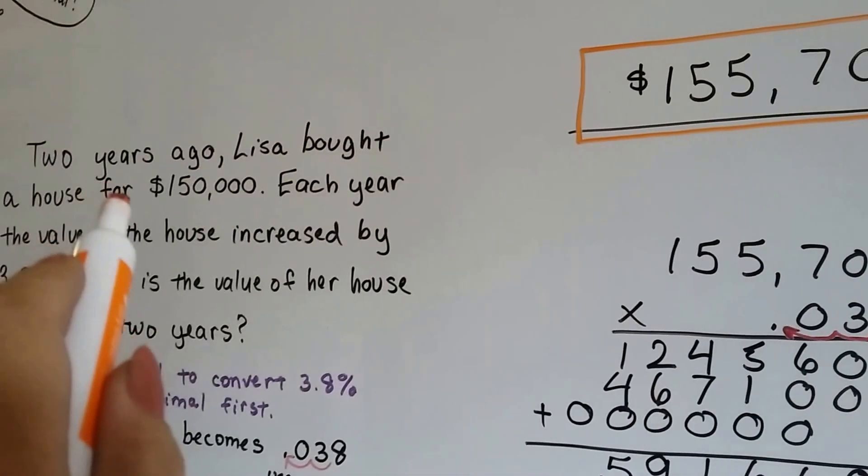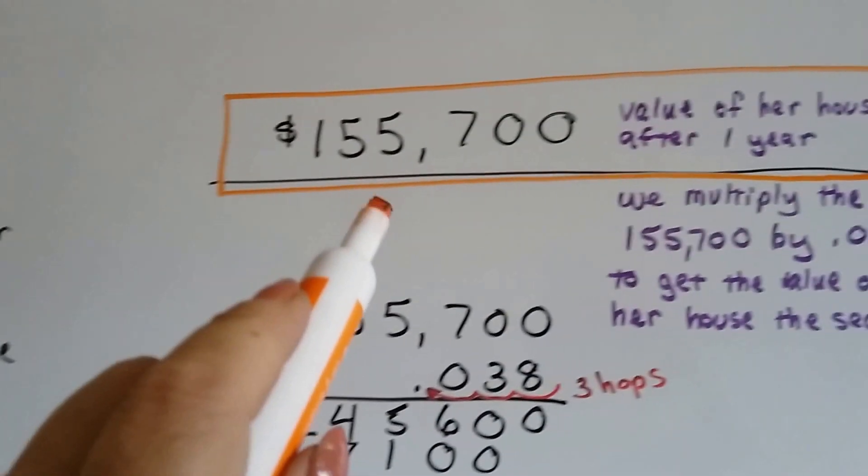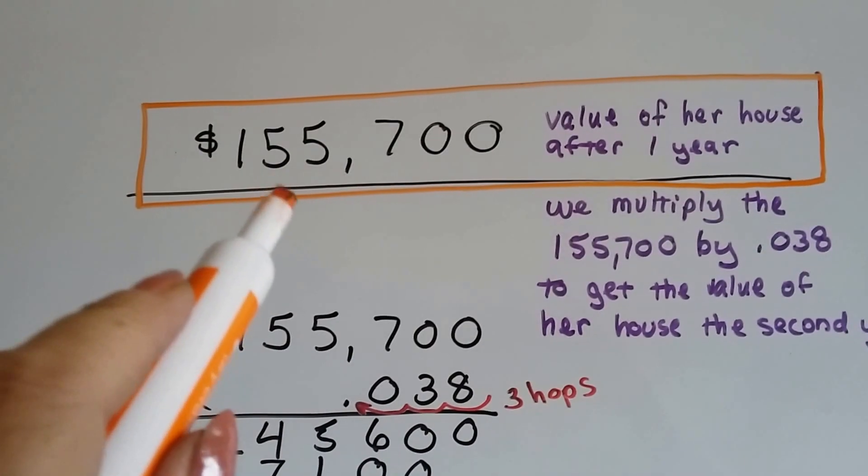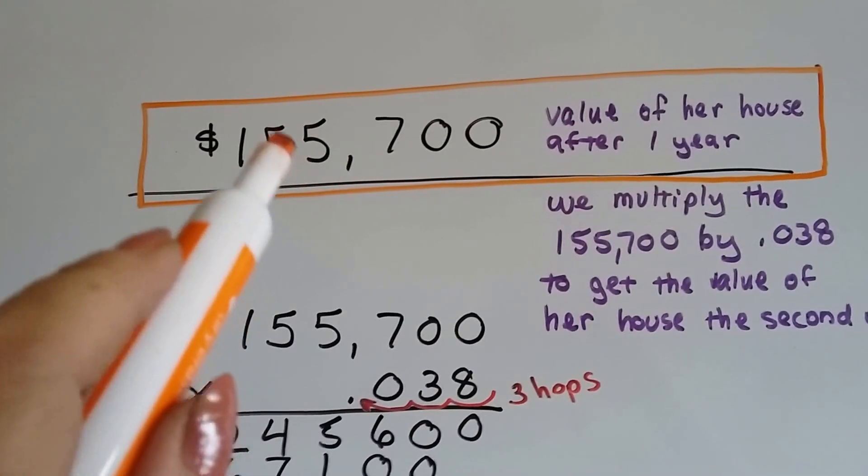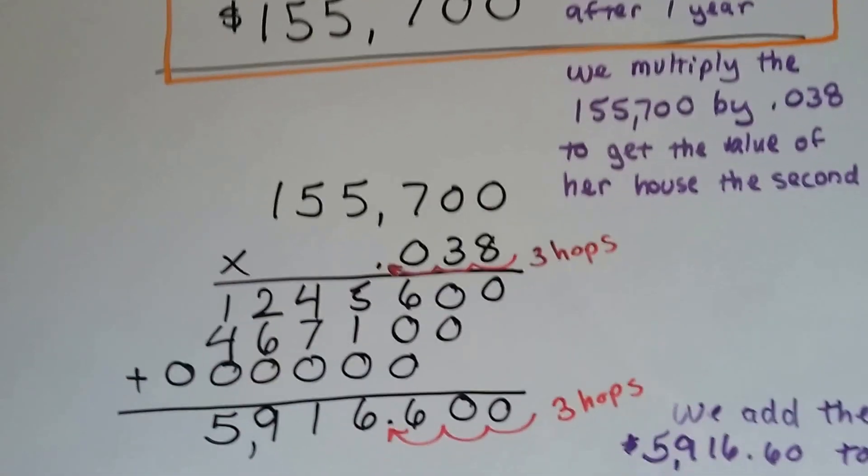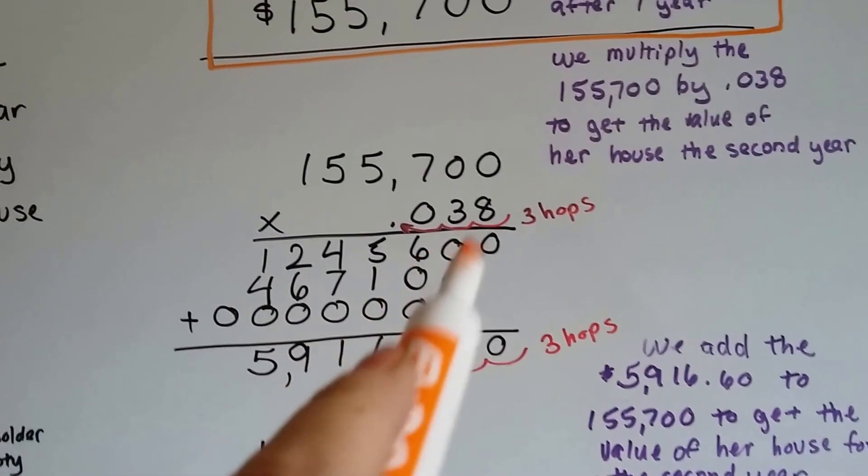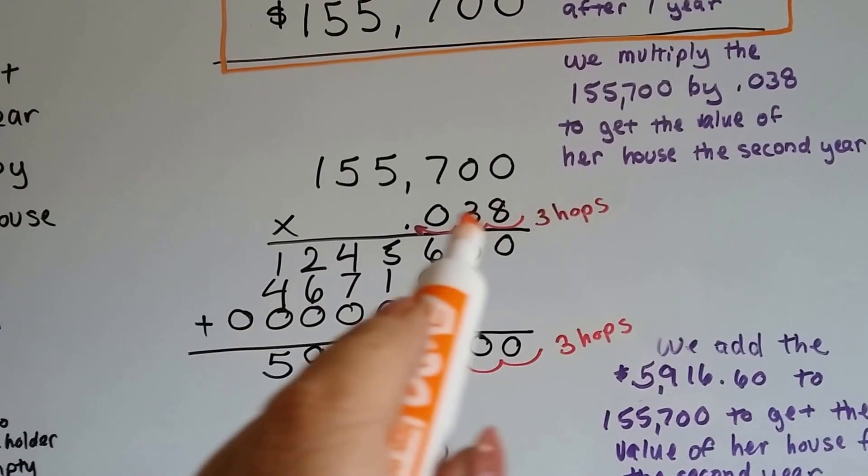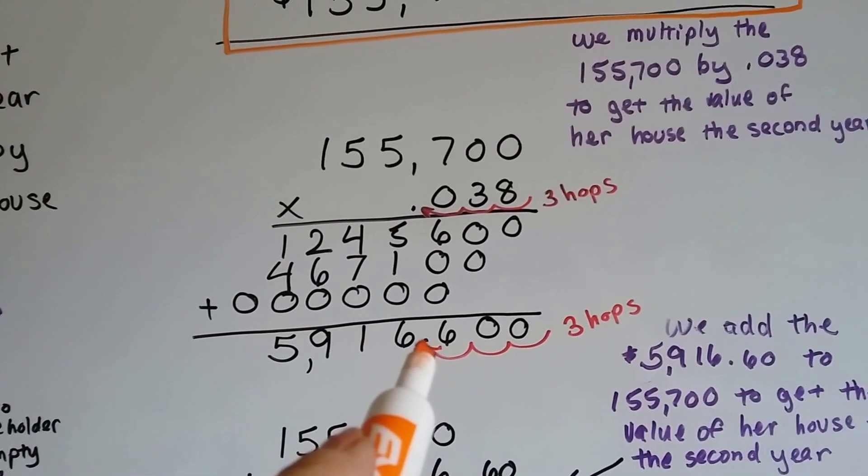We don't do it to the 150, that was the old value. We have to find out what a 3.8% increase is on the new value. So we have to multiply this number by the 0.038. And we do each place value, and there's three hops in the equation, so we put three hops into the answer.